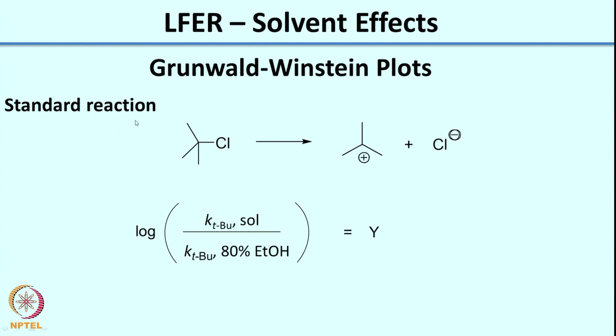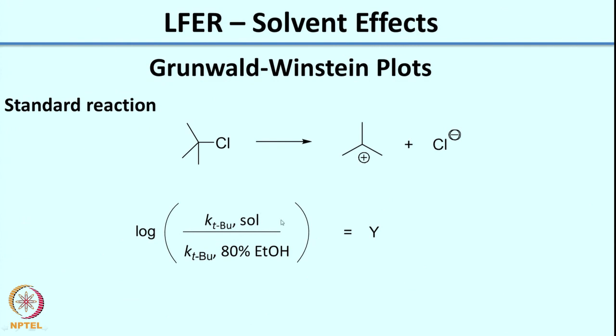The standard reaction for the Grunwald-Winstein scale is the dissociation of t-butyl chloride. T-butyl chloride dissociates to give a highly stabilized carbocation and chloride — this is the rate-determining step of an SN1-like reaction. When you have such a polar intermediate, the solvent will have a major role in improving reaction kinetics. If you increase the solvent polarity, the rate of the reaction will increase.